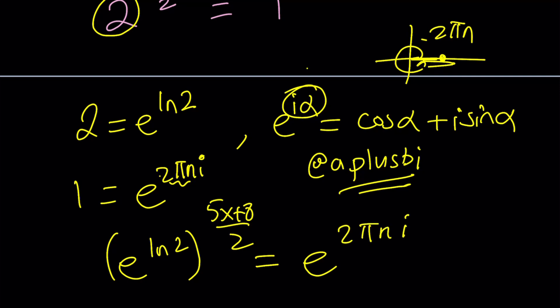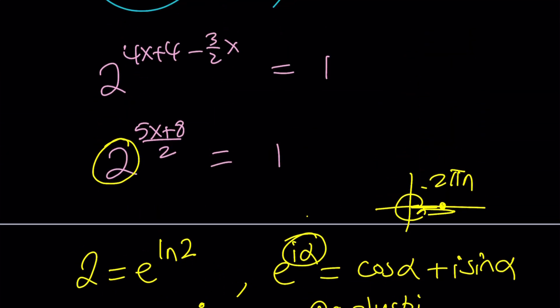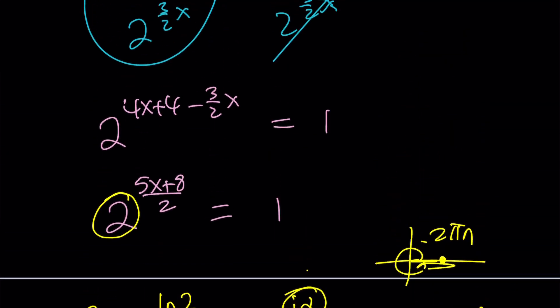Wait a minute. We're missing an i here, right? Where is the i? There is no i. Well, there doesn't have to be an i because the left-hand side, as you know, is kind of like a real valued expression.